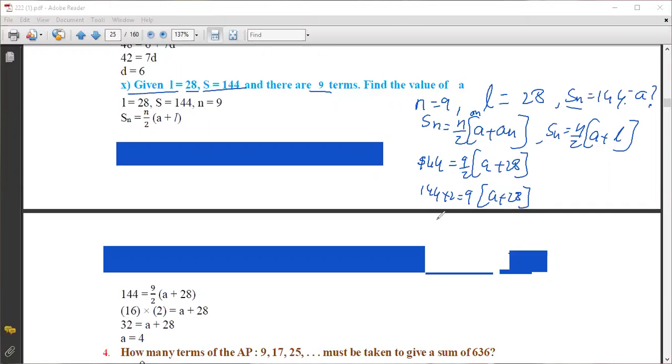Now bring this 9 to that side. 144 into 2 divided by 9. See, 144 into 2 divided by 9. 9 × 1 is 9, 9 × 5 is 45, 9 × 6 is 54. 16 to the 32, so this side it will become 32.